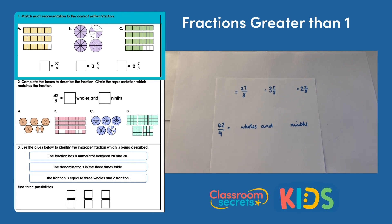We have A, B, and C which are images of fractions, and then we have our fractions along the bottom: 27 eighths, three and five eighths, and two and seven eighths. We're either looking to write it as an improper fraction where the numerator is bigger than the denominator, or as mixed numbers where we have our whole number and a fraction.